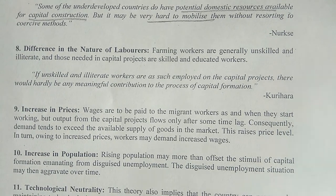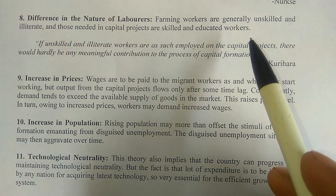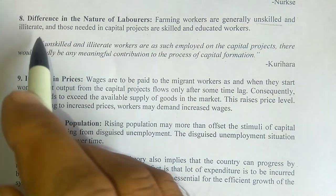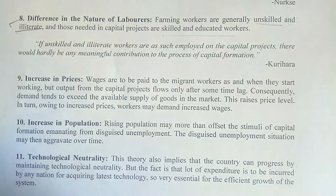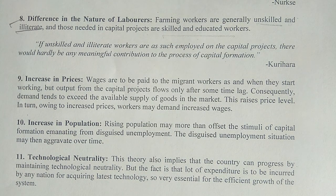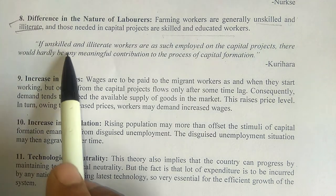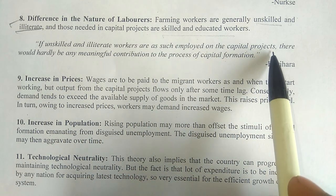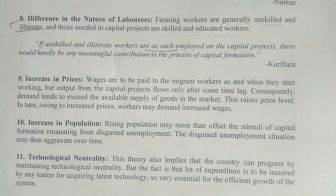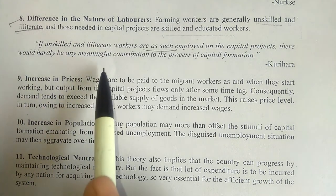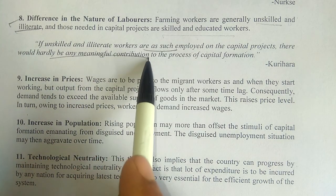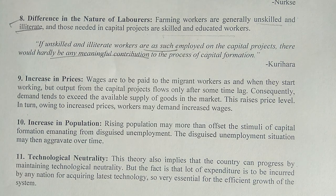Another problem: difference in the nature of laborers. The farm laborers being withdrawn are unskilled and illiterate, while those needed in capital projects are skilled and educated. According to Kurihara (Kenneth K. Kurihara, distinguished professor of economic theory at the State University of New York, USA): if unskilled, illiterate, and untrained workers are directly placed on capital projects as-is, there would hardly be any meaningful contribution to the process of capital formation, because they cannot do capital-sector work.